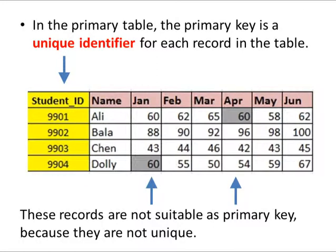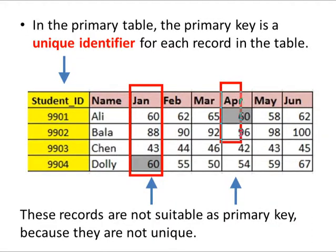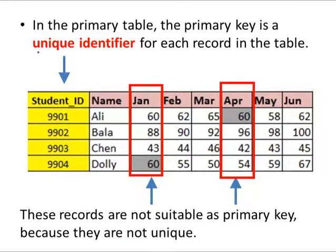Some of the other columns are not suitable as primary keys. For example, the column for January is not suitable for the primary key because it is duplicated in the other column for April. When there are duplicated entries in the columns, they are not suitable for the primary key because the primary key should be unique.